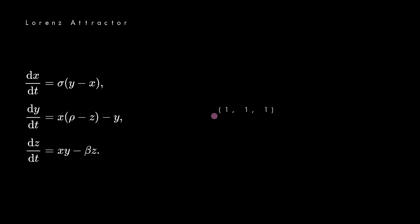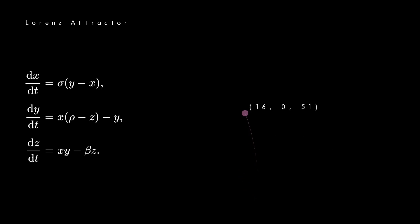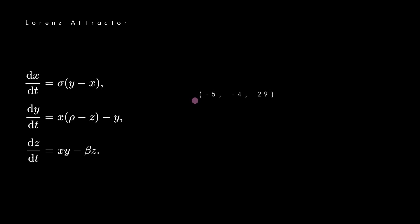Here's how it works. You take a point in space with some initial coordinates — let's say 1, 1, 1. Then you move the point according to these three equations. What the equations are saying is: every iteration, add dx to the x coordinate, dy to the y coordinate, and dz to the z coordinate.